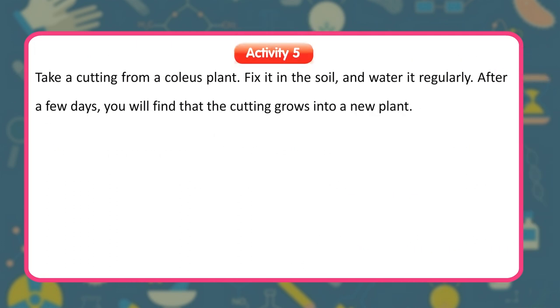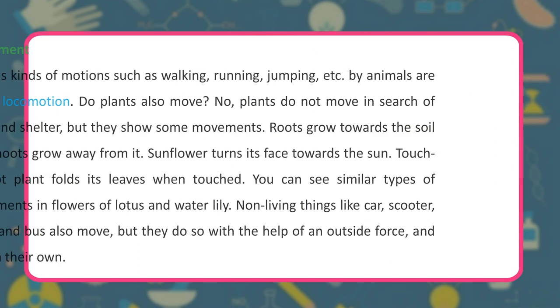Activity: Take a cutting from a coleus plant, fix it in soil, and water it regularly. After a few days, you will find that the cutting grows into a new plant.